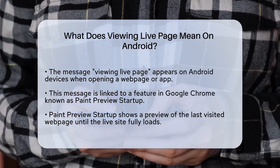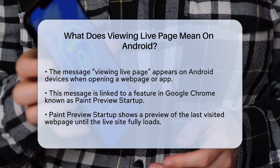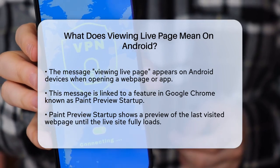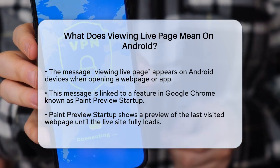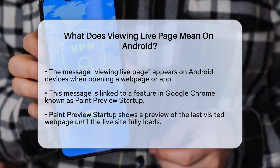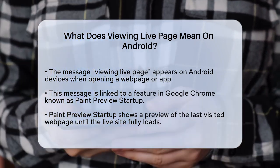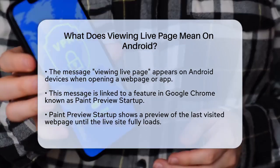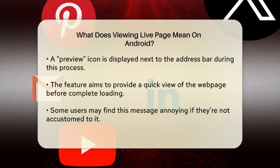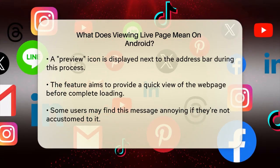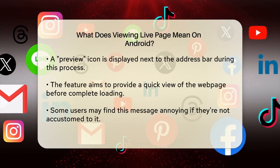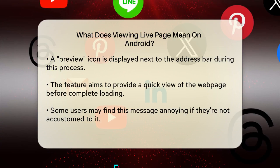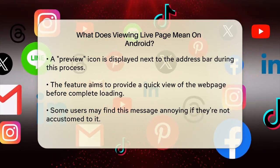This message is related to a feature in Google Chrome called Paint Preview Startup. When you open Google Chrome, it shows a preview of the web page you last visited until it loads the live site. This is indicated by a preview icon next to the address bar and the 'viewing live page' notice. Essentially, this feature is designed to give you a quicker glimpse of the web page before the full content is loaded.